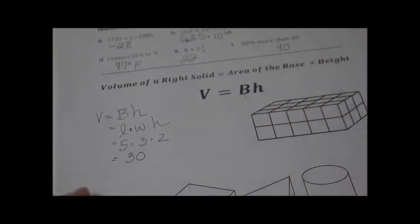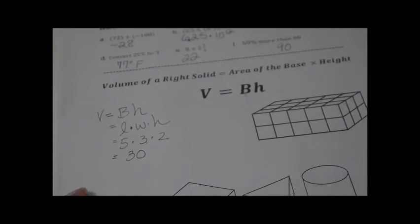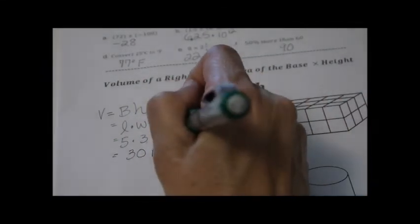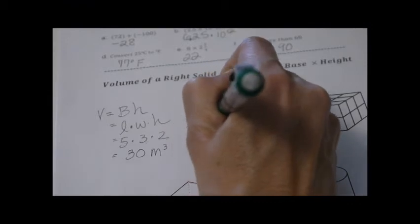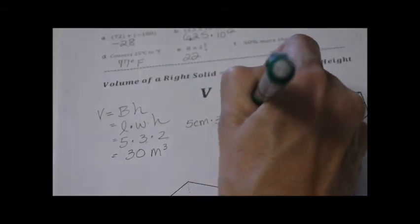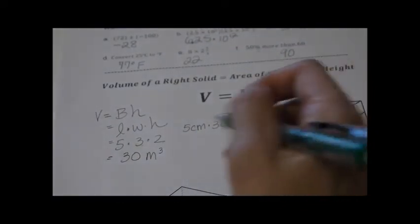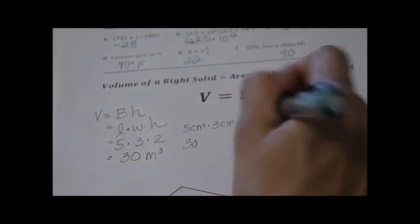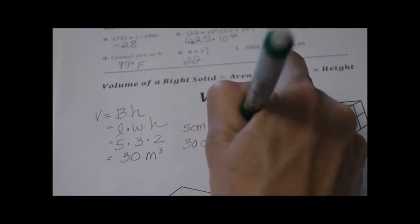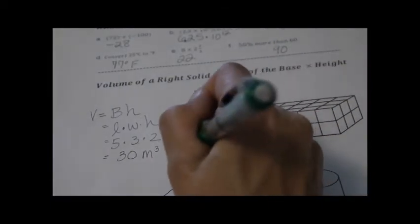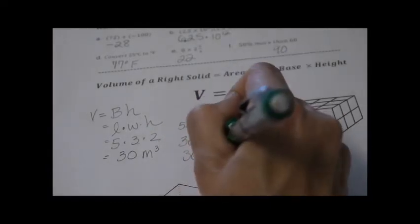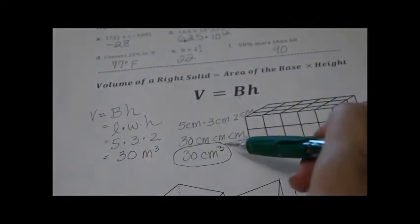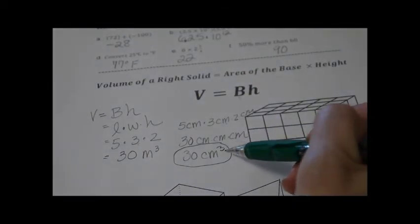The units are cubic — in this case, let's say centimeters. So we have 5 centimeters times 3 centimeters times 2 centimeters. If you multiply all the digits, you get 30, and then you have centimeter times centimeter times centimeter, which we shorten to centimeters cubed. When doing volume in three dimensions, it's going to be cubic, or cubed, or to the third power.